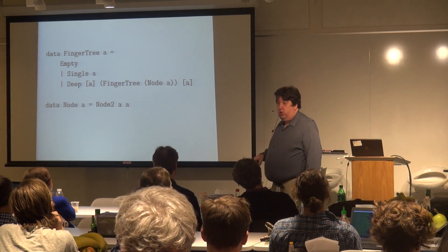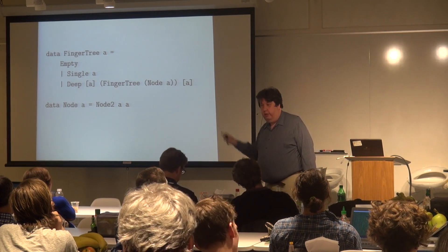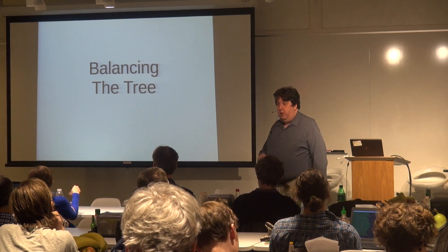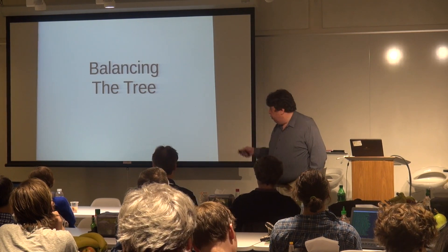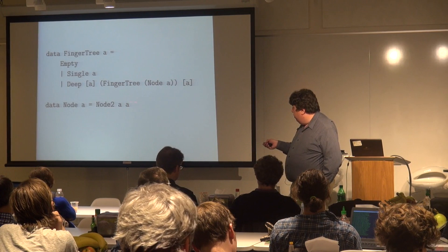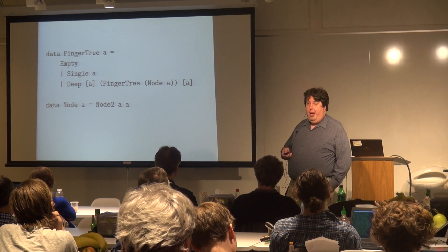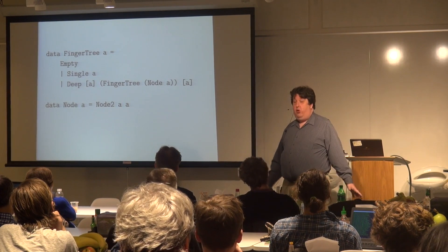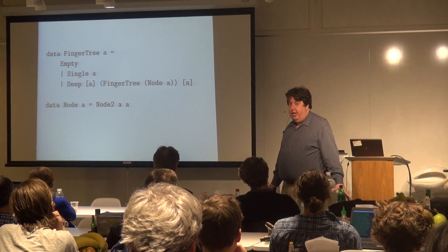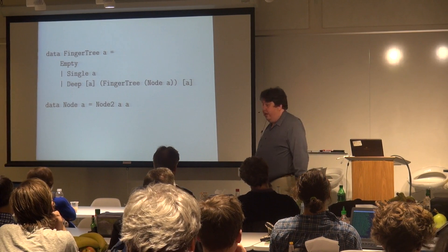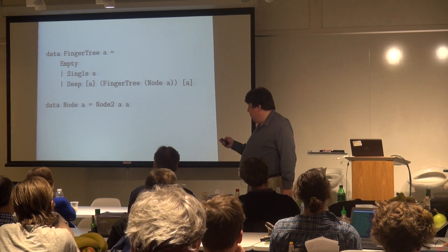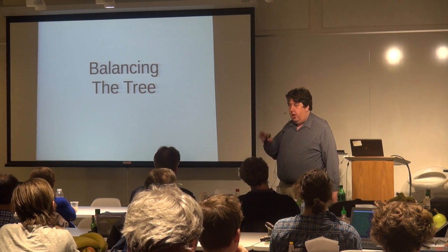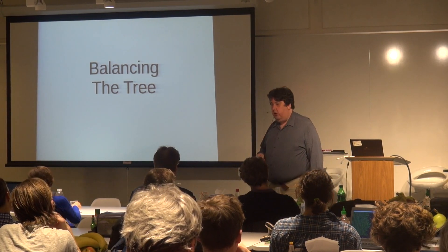We're using Haskell's type system to actually enforce an invariant here. The top-level finger tree A will have these elements of type A. The first step down, they'll be of type node A — which is just a pair. The next step down will be nodes of nodes A, which will be pairs of pairs, et cetera. Circling back: I didn't provide any way to balance the tree — I just assumed the tree is always balanced with a perfect power of two. That's not always true.